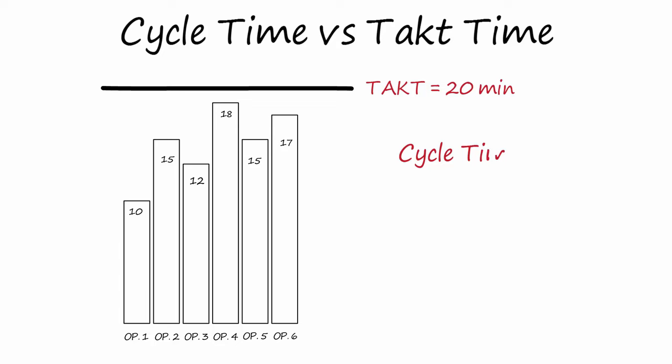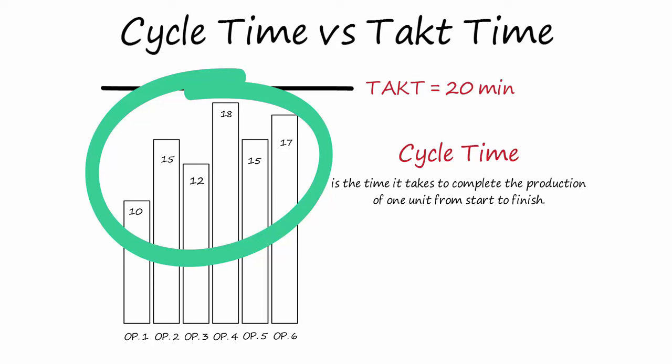Cycle time is the time it takes to complete the production of one unit from start to finish. If we produce a product in different steps, cycle time is the sum of all time spent at each station. In this example, cycle time equals 87 minutes.